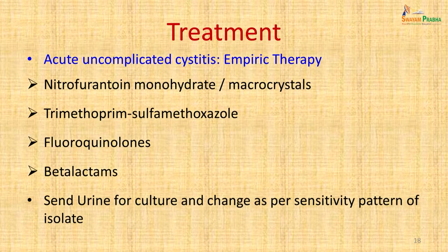Treatment of uncomplicated cystitis generally involves empiric therapy with nitrofurantoin, trimethoprim-sulfamethoxazole, fluoroquinolones such as ciprofloxacin and norfloxacin, or beta-lactam antibiotics such as ampicillin and amoxicillin. However, since resistance in urinary pathogens is on the rise, urine for culture should always be sent and therapy changed based on the sensitivity pattern of the isolate obtained from that patient's urinary sample.